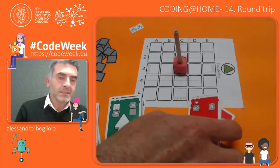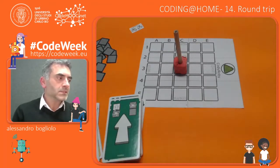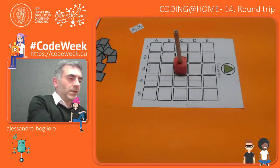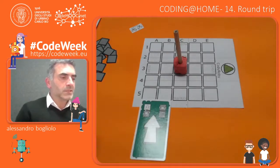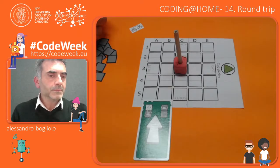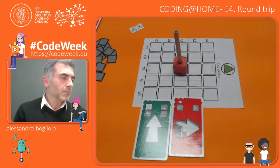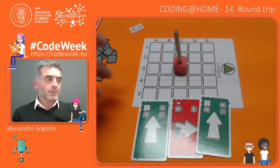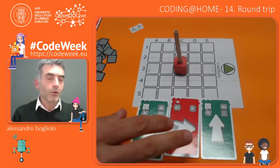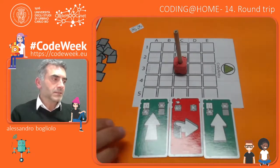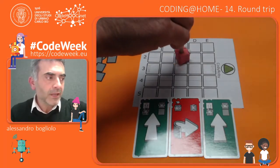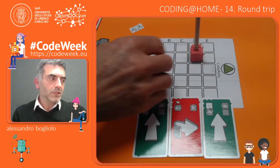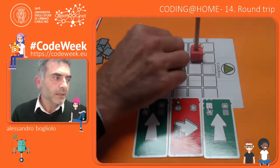Using these cards that are the instruction set we have available, I could say: move forward, turn right, and move forward. I can freely decide which program to write and where to bring Robby, because there are no constraints on the outward trip. And this is the path.